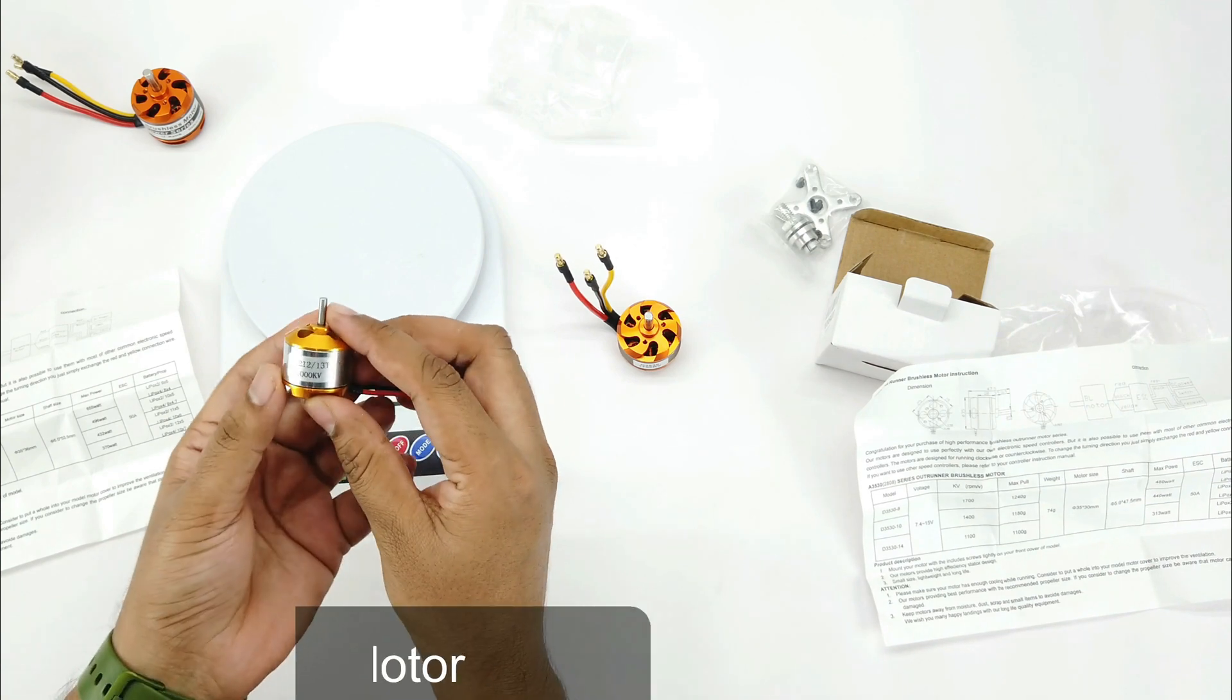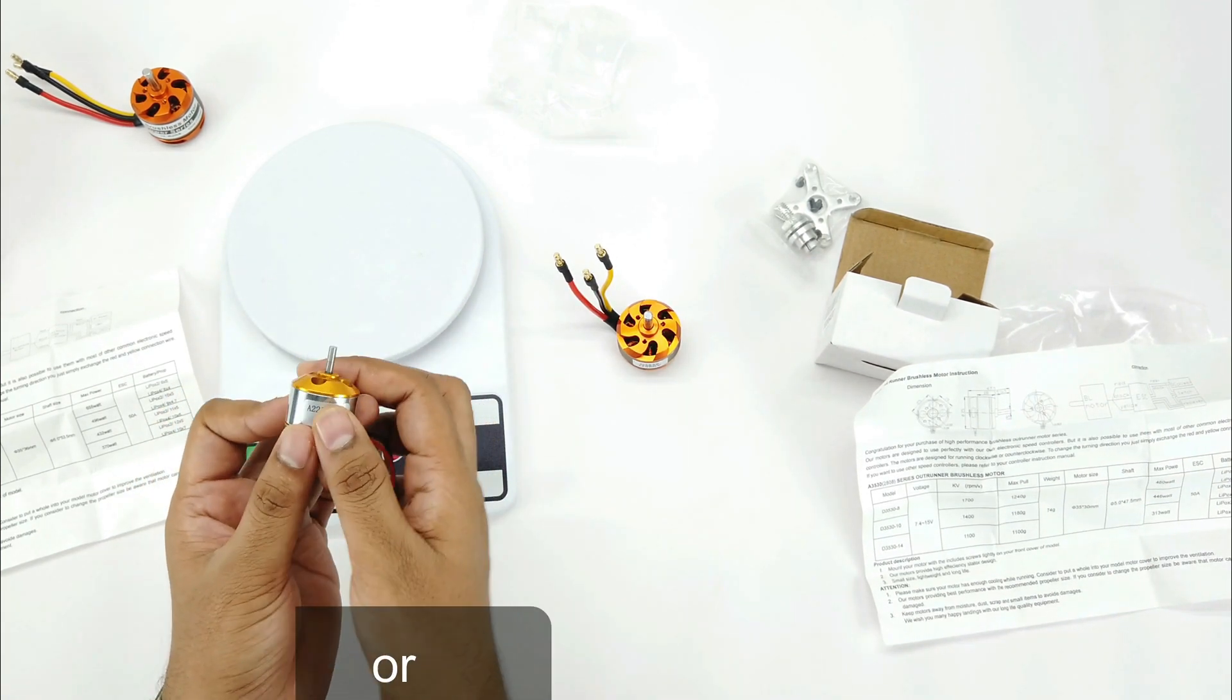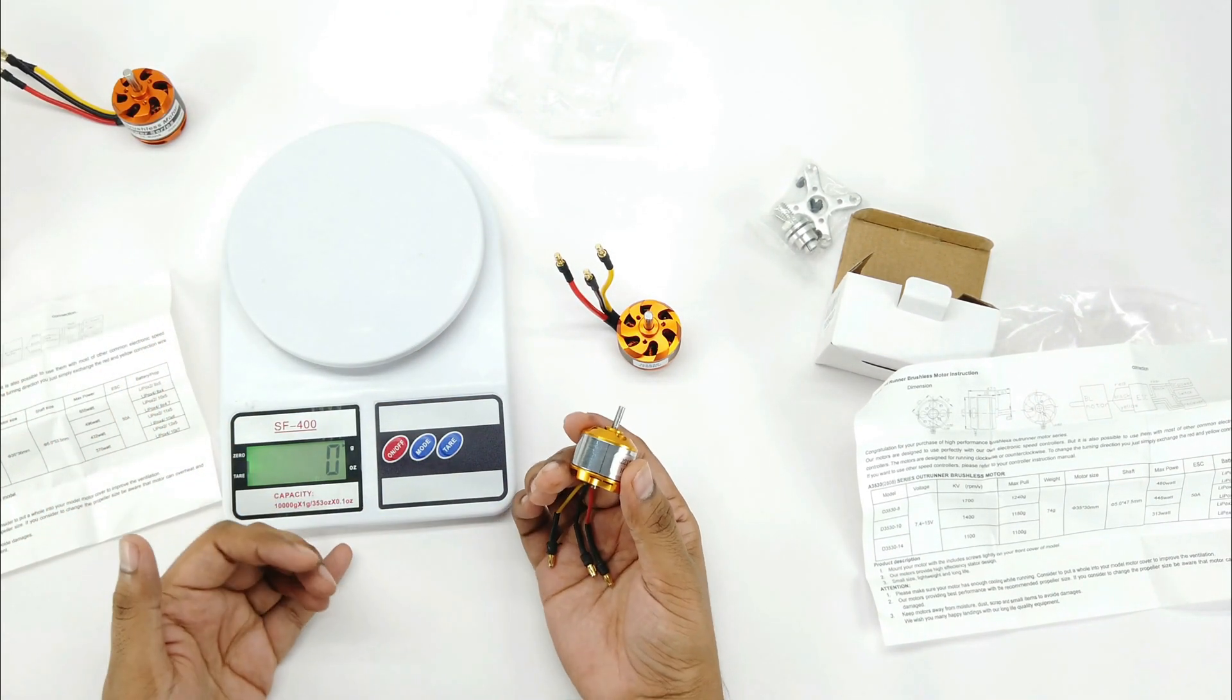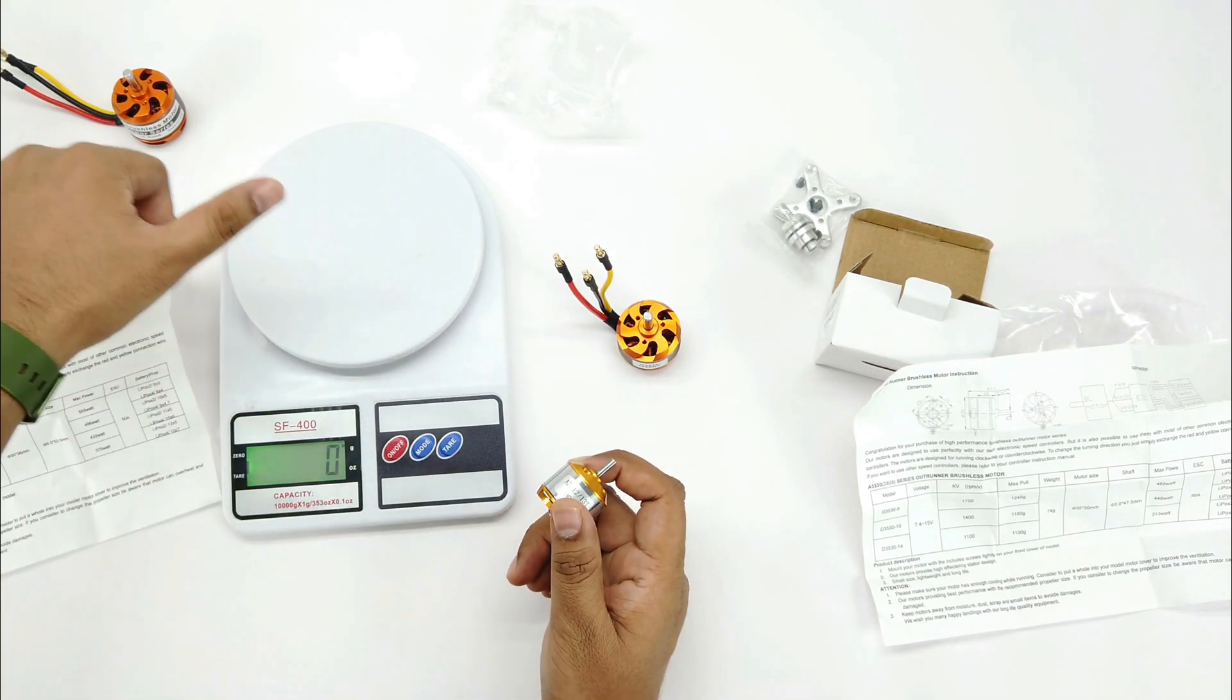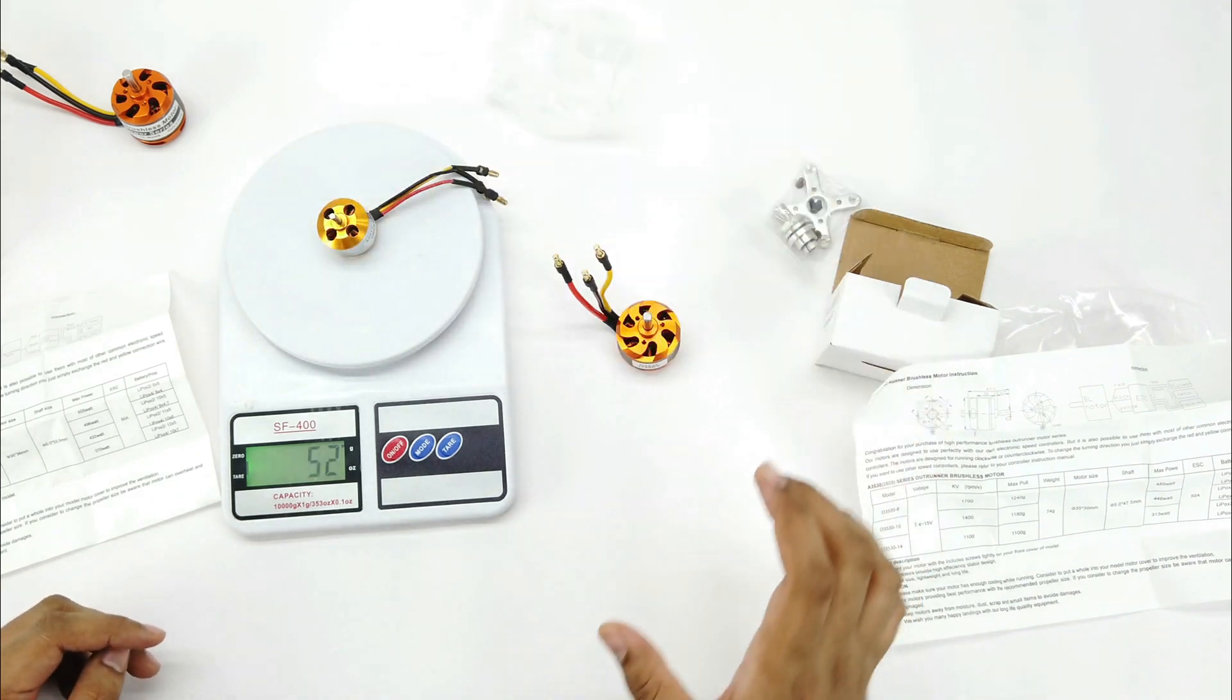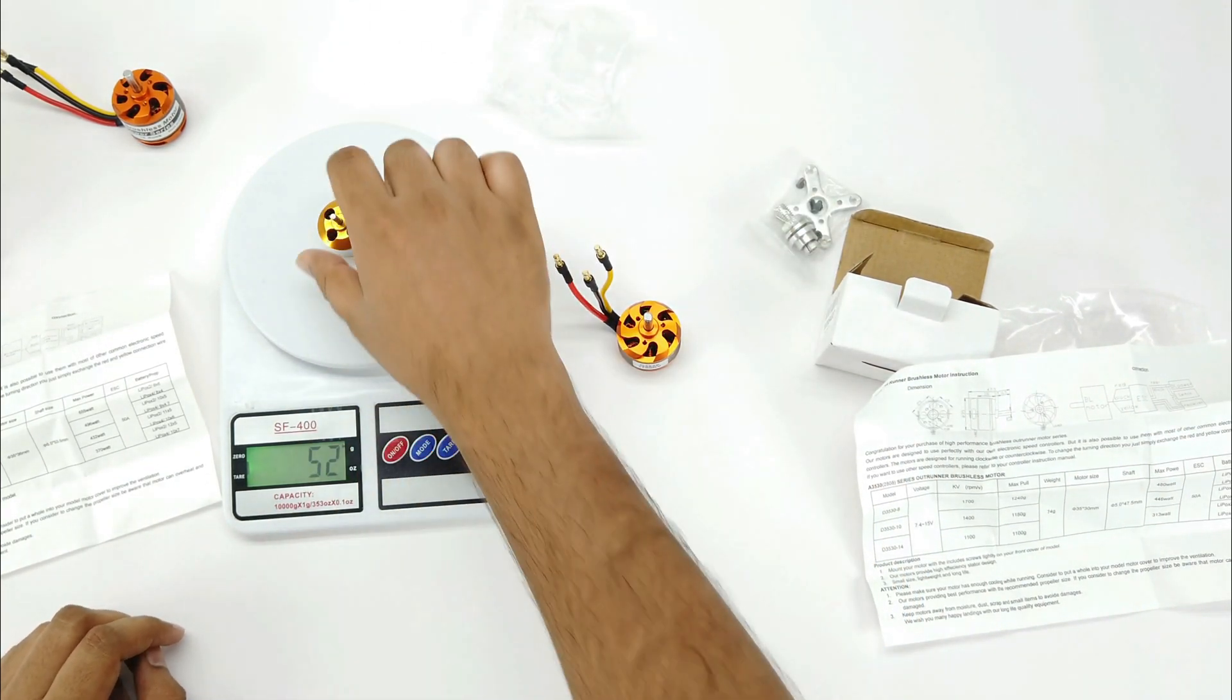But this standard motor A2212 costed me 450 INR, that's approximately $6. That means these two motors are 3 to 4 times costlier than this one. And its weight is around 52 grams, so weight is also comparatively less.